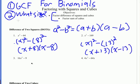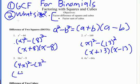Number three — look for a GCF. There is none. It's a binomial. Is it a difference of two squares? We can see 16 is a perfect square, x squared is a perfect square, and 9 is a perfect square. So we have 4x squared minus 3 squared, and this factors into (4x plus 3) times (4x minus 3).